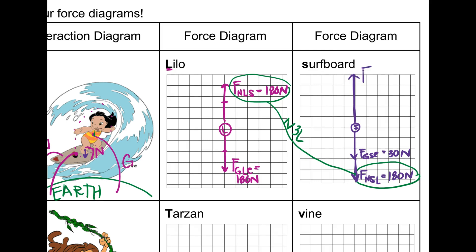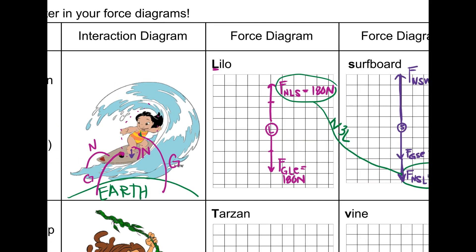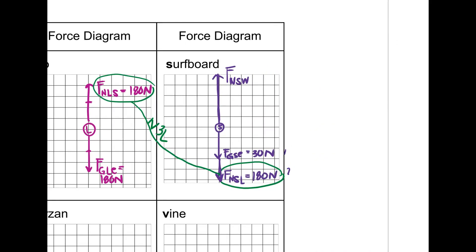The up arrow is going to be a normal force on the surfboard by the water. When we look at the surfboard, we see interactions with Lilo, with the Earth, and with the water — so we expect to find three interactions total. The interaction between the surfboard and the water is going to happen at 180 newtons plus 30 newtons, which equals 210 newtons.